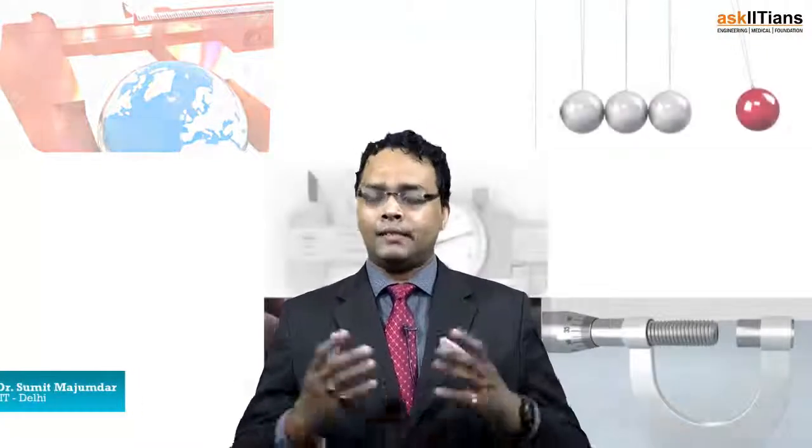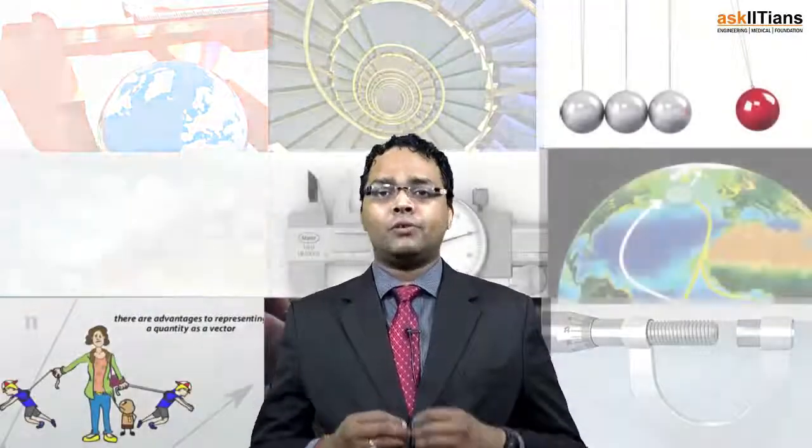We learned about different prefixes and suffixes in the previous part. Now we need to understand how we can break up the system of units into two broad categories: scalar quantities and vector quantities.